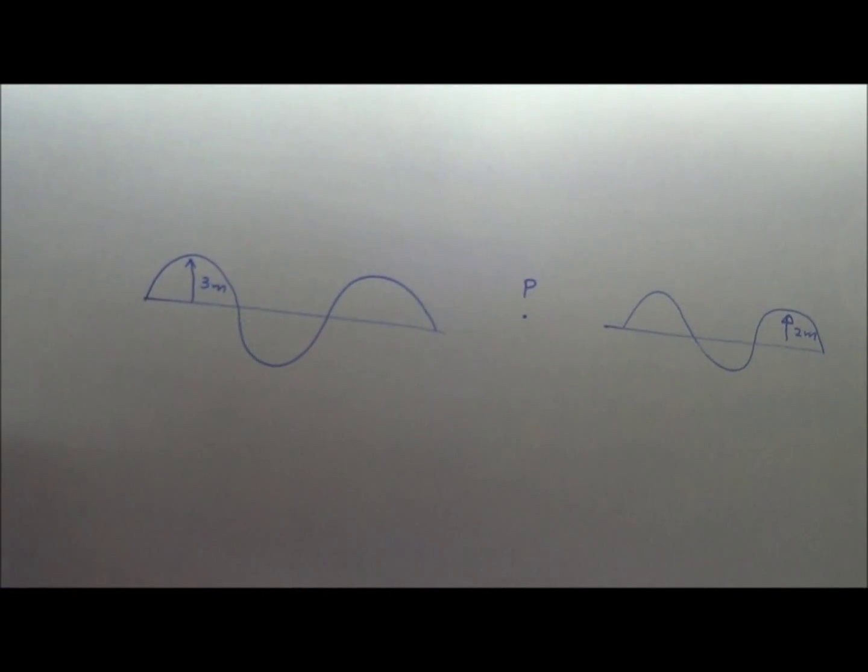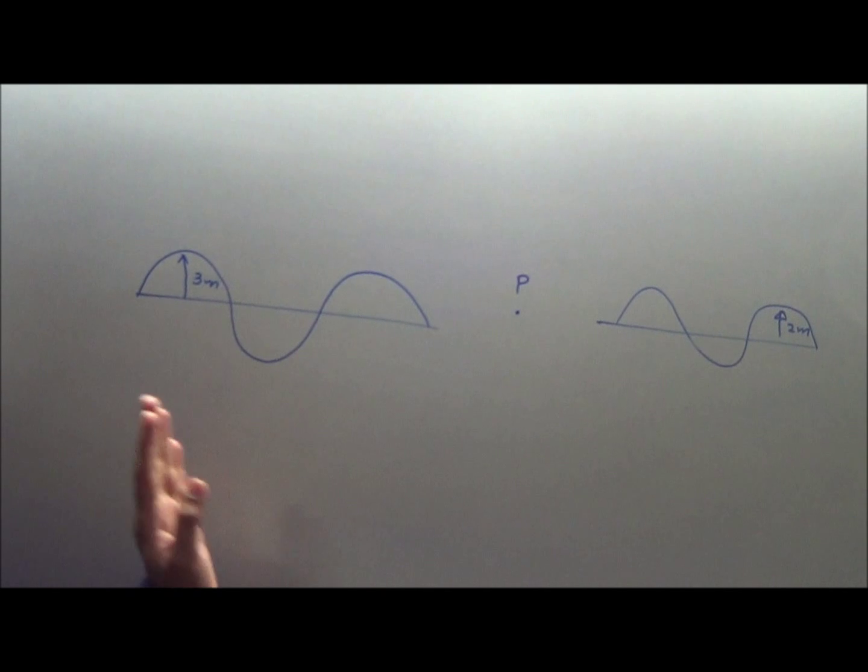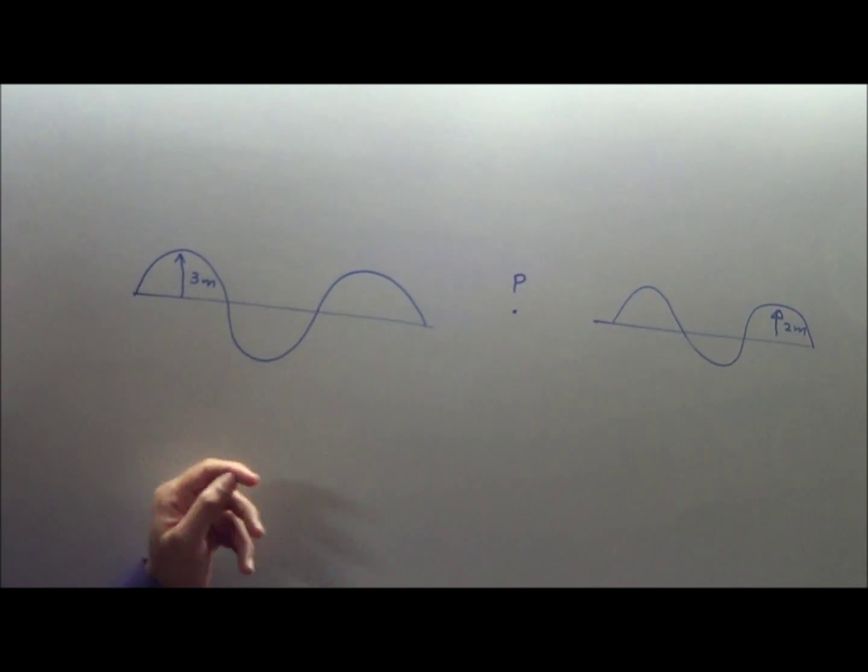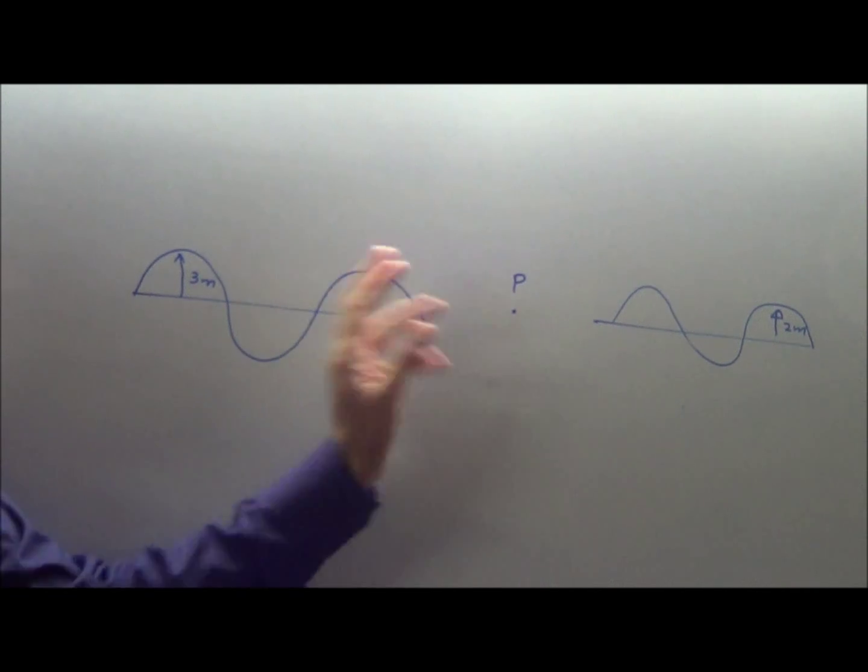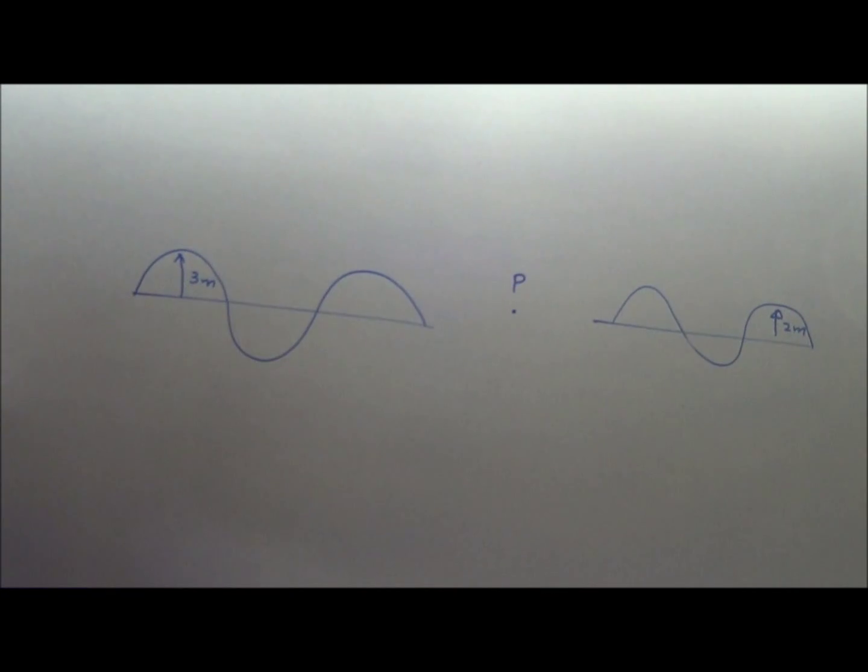Principle of superposition of waves. P is a point in space. Wave 1 is arriving at P, wave 2 is also arriving at P.